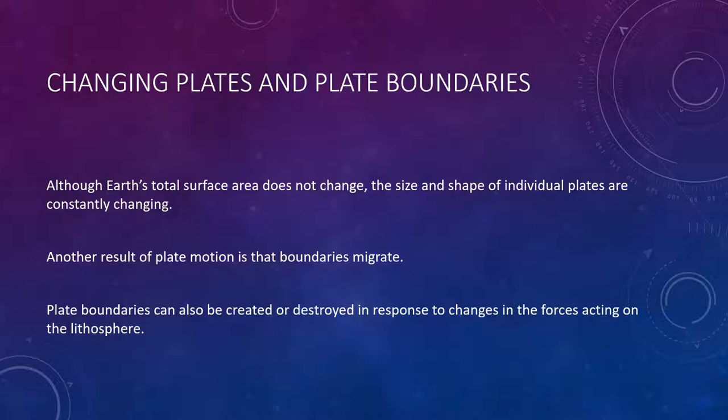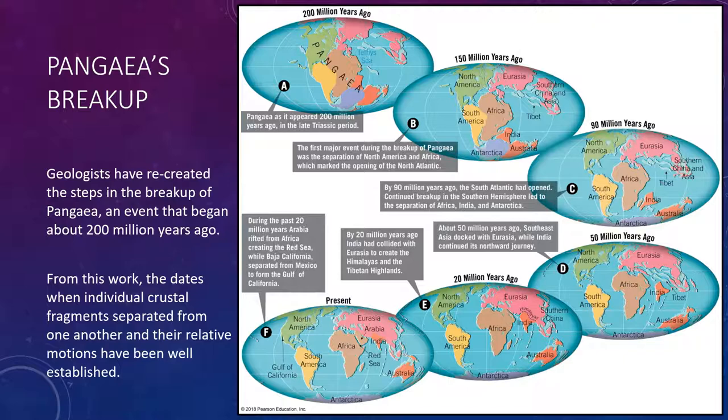The breakup of Pangea is a classic example of how plate boundaries change through geological time. Wagner used evidence from fossils, rock types, and ancient climates to create a jigsaw puzzle fit of the continents, thereby creating his supercontinent Pangea. By employing modern tools not available to Wagner, geologists have recreated the steps in the breakup of this supercontinent, an event that began anywhere from 180 to 200 million years ago. From this work, the dates when individual crustal fragments separated from one another and their relative motions have been well established.